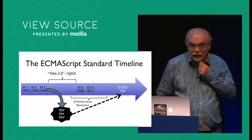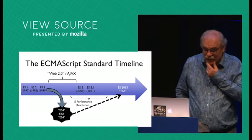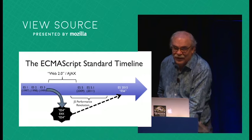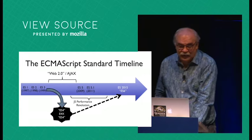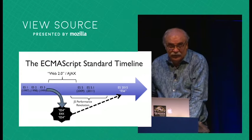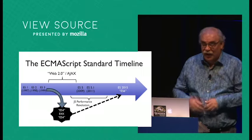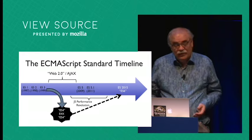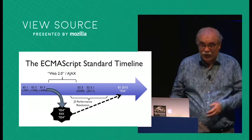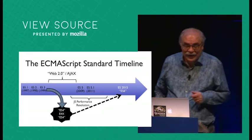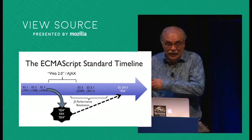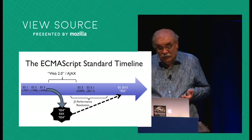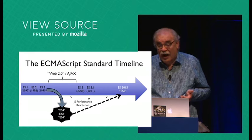This is kind of the timeline of ECMAScript development: you got the initial standardization, then work went off into a black hole that really didn't accomplish a lot. But then about six to eight years ago, serious work got back on track for the next major edition, which became ECMAScript 6. Some interesting stuff developed during that black hole period informed what went into ES6, but really the majority of work for ES6 started in about 2009 and happened since then.